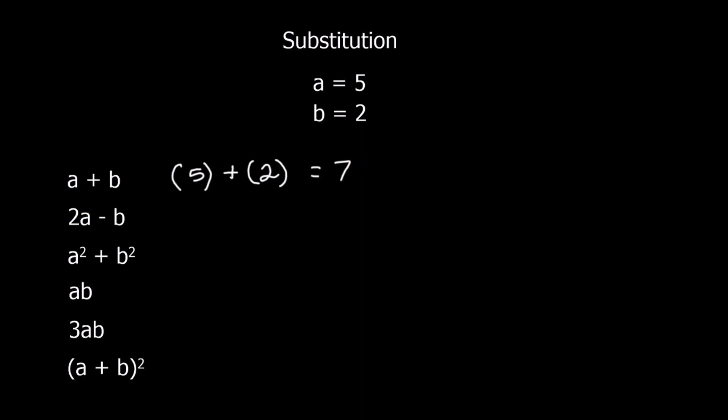Here I've got 2A, so that's 2 times 5, take away our 2. So 2A means 2 times A, so 2 times 5 is 10, take away 2. 10 take away 2 is 8.